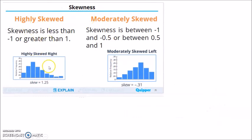So skewness, if the skewness is less than negative 1 or greater than 1, then we say that the data is highly skewed. Highly skewed. So if the skewness is less than negative 1 or greater than 1.